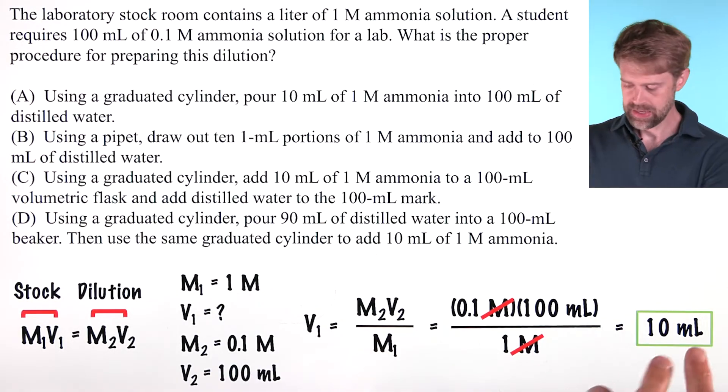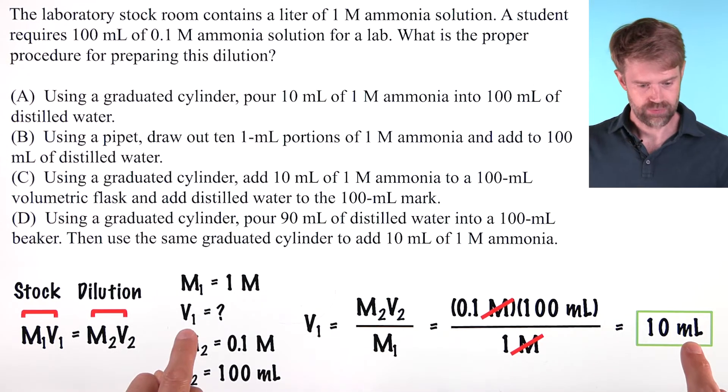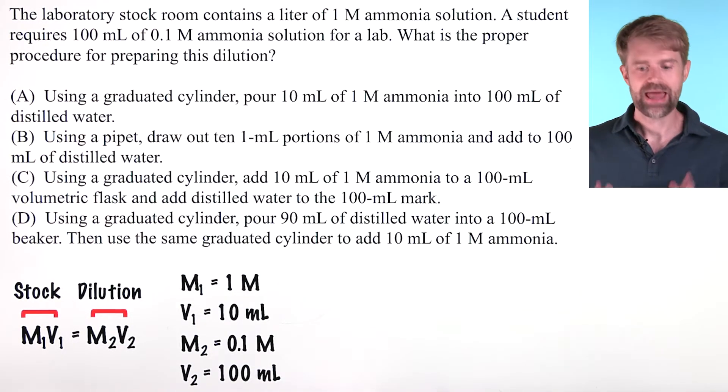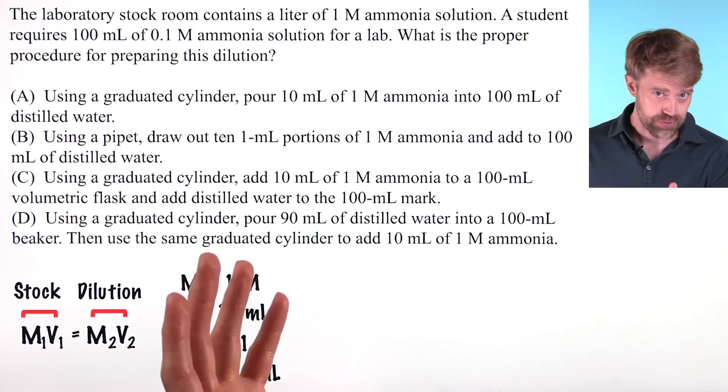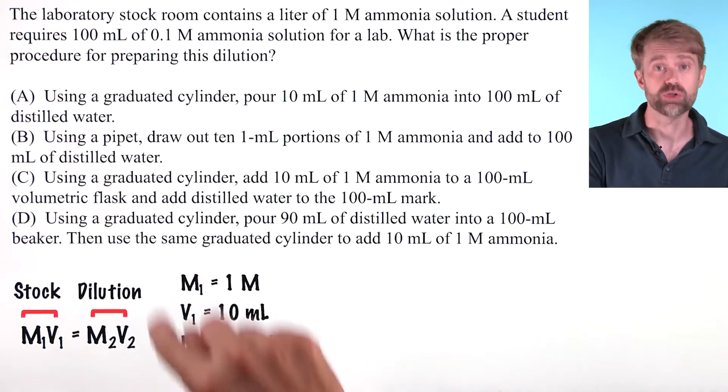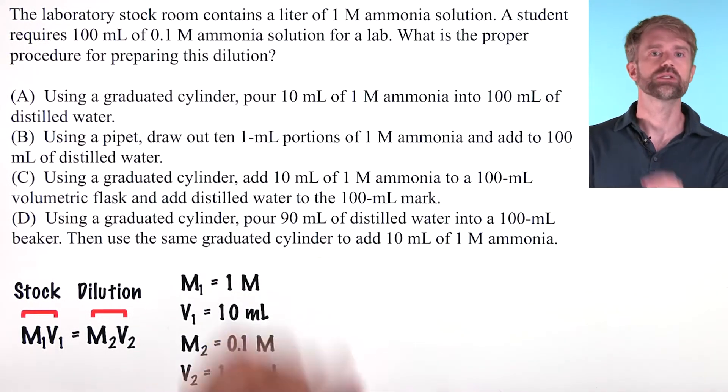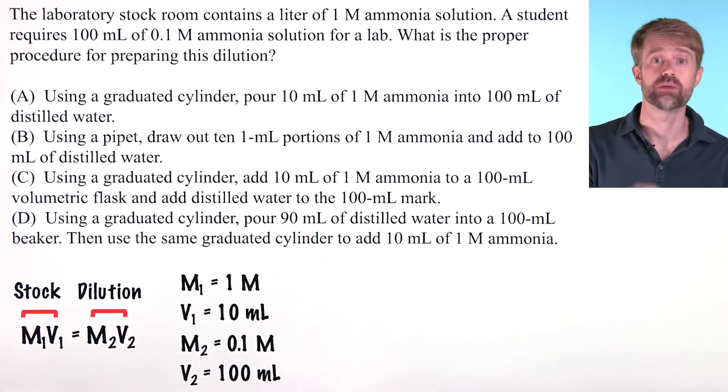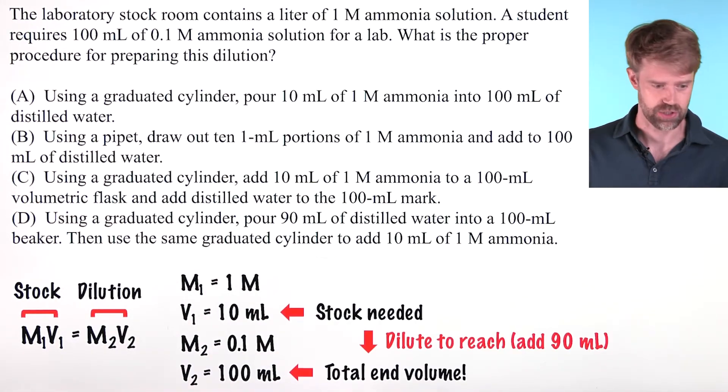So now that we've calculated V1, let's make some space here, we'll just move this over there, and now comes a part where we have to understand correct lab procedure, particularly correct lab procedure for making a dilution. This is something that so many students confuse, even if they know how to do the math correctly. So pay attention here.